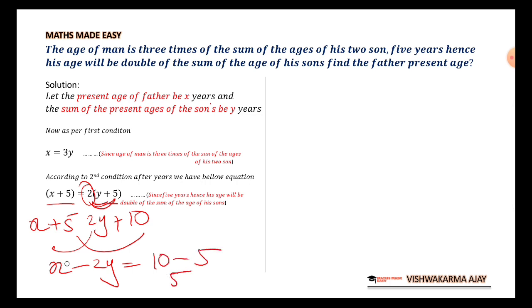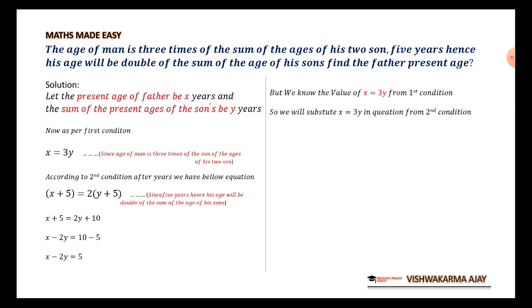But, we know from the first condition that the value of X is 3Y. So, I will be substituting the value of X that is 3Y in this equation. So, I have 3Y minus 2Y. 3Y minus 2Y that is equal to 5. So, 3Y minus 2Y is Y is equal to 5. That's how we got the value of Y as 5.